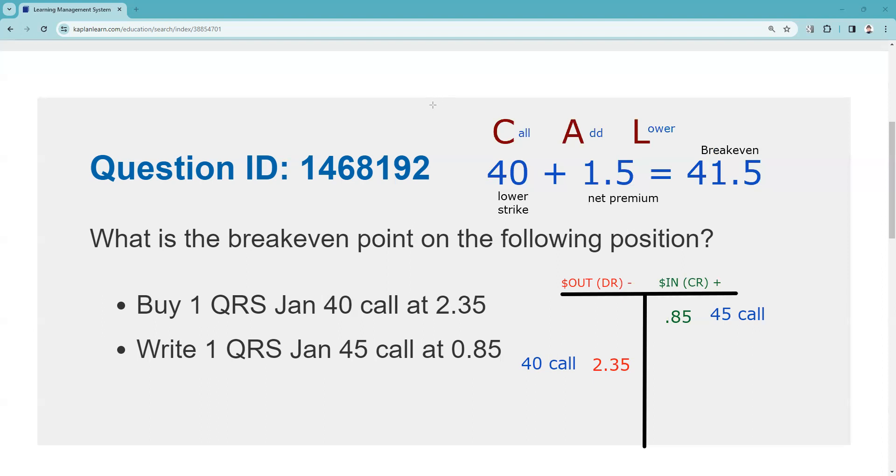Now, test taking trick. We get the breakeven here at 41 and a half, but we should know that the breakeven is somewhere between 40 and 45, because that's the whole point of the spread. I want to play between the floor, in this case 40, and the ceiling, 45. And so it's got to be a number somewhere there that gives you a 50-50 on breakeven. You can eliminate any choices offered to you that aren't somewhere between 40 and 45.